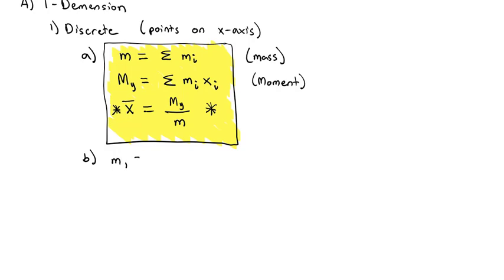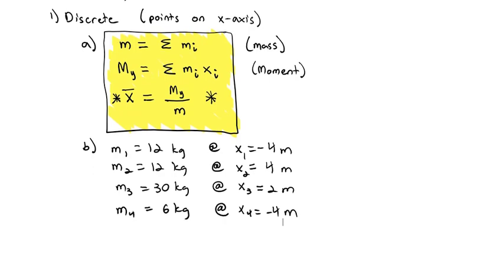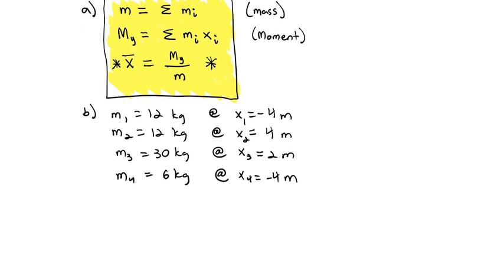For example, if I put a first mass of 12 kilograms at x equals negative 4, a second mass of 12 kilograms at x equals 4 (in meters), a third mass of 30 kilograms at x₃ equals 2 meters, and a fourth mass of 6 kilograms at x₄ equals negative 4 meters — we want to know where to put the center of balance. First, we calculate the total mass: 12 plus 12 plus 30 plus 6 equals 60 kilograms.